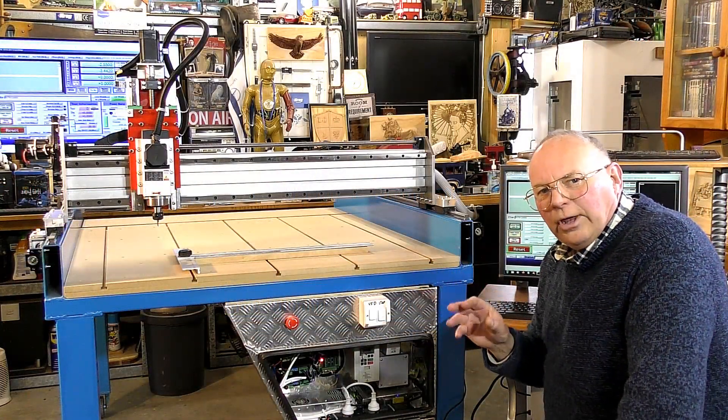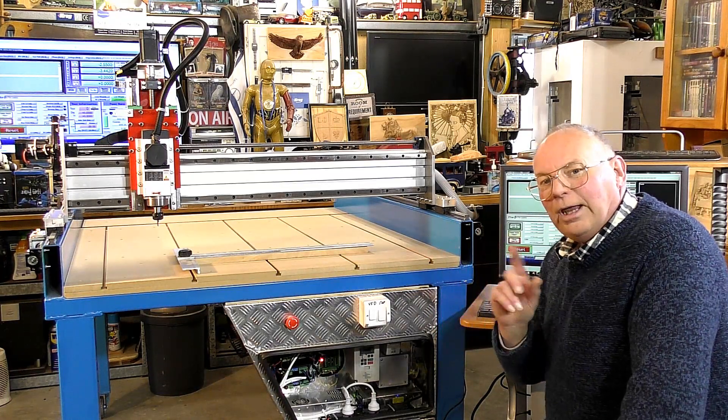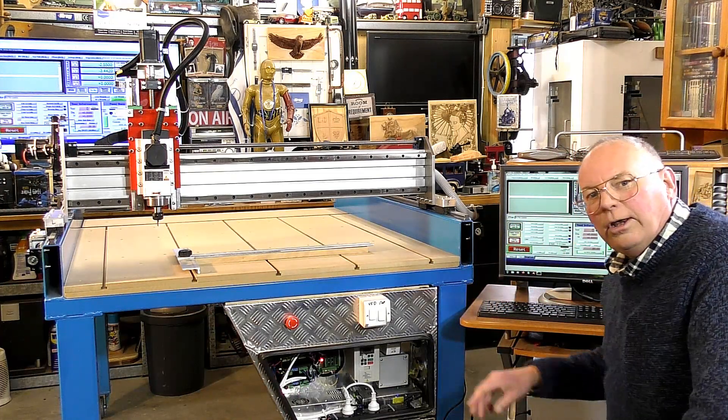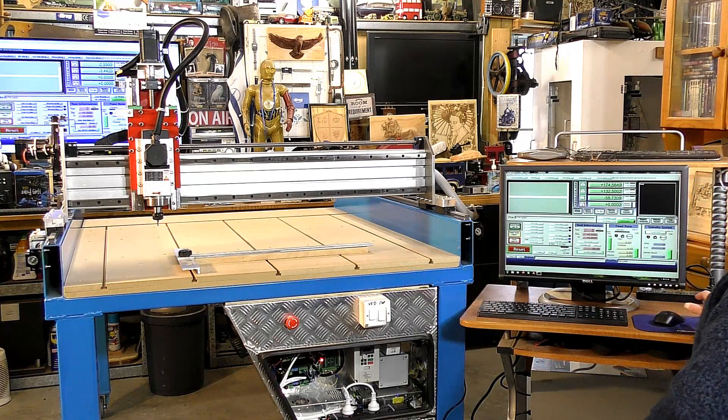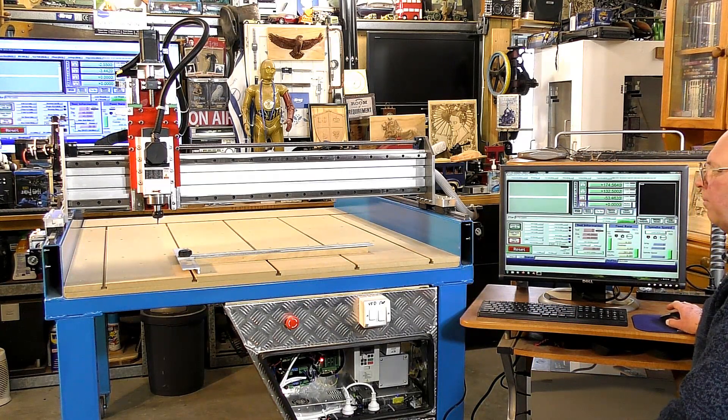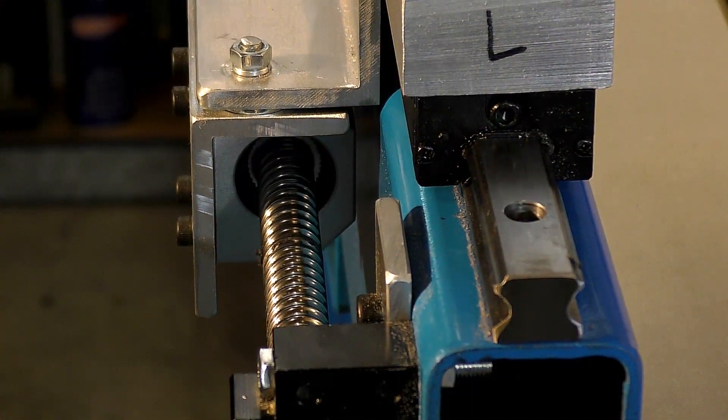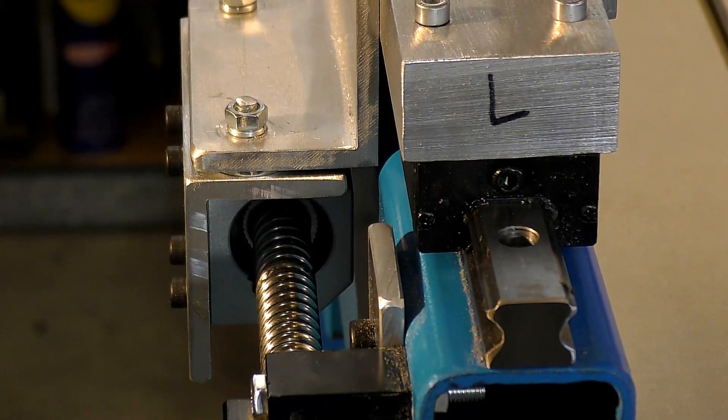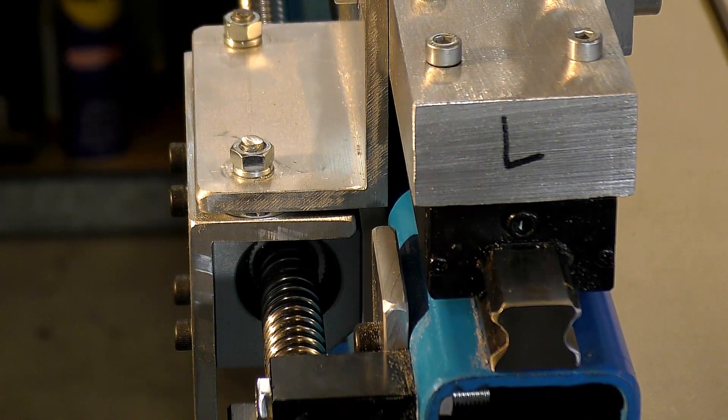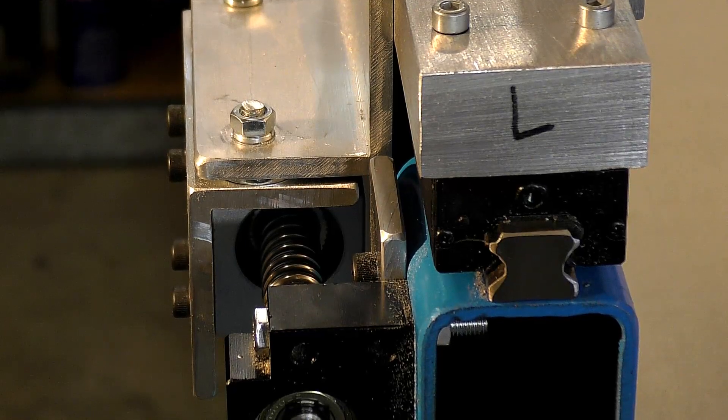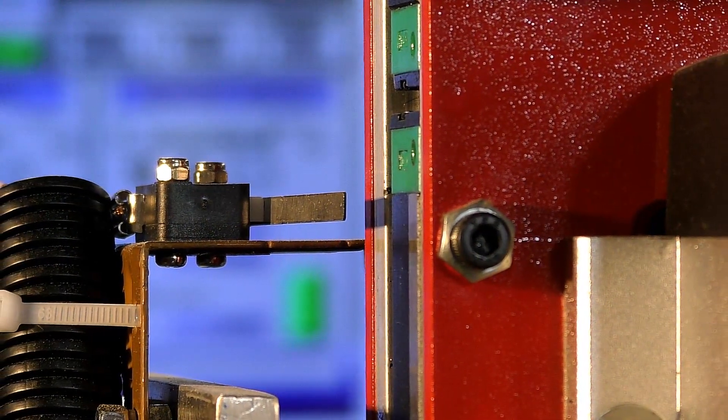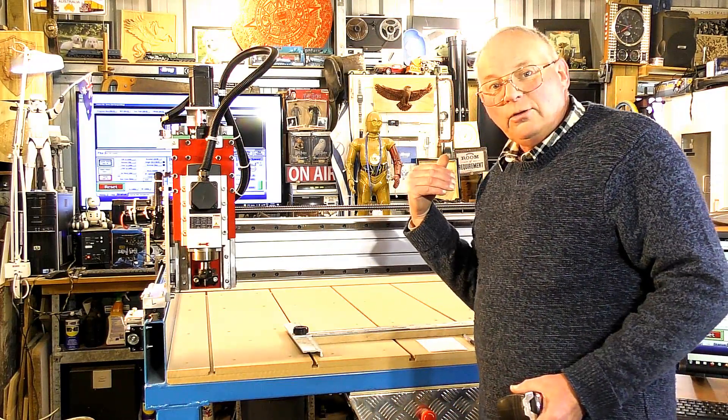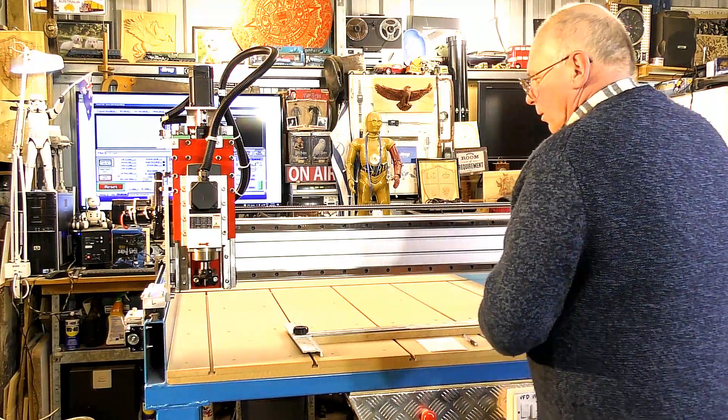So after making all those settings and adjustments and tests, it is now the time to press Ref All. After we've reffed all, we will measure up and set the soft limits. So here we go, Ref All. So now we can measure the axes to see how much travel we have, and we can set those figures into these soft limits very easily done.